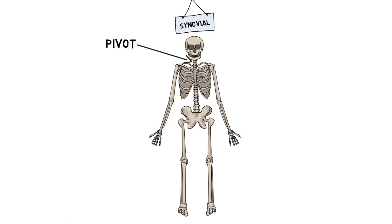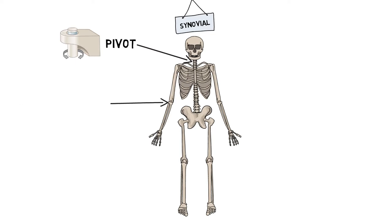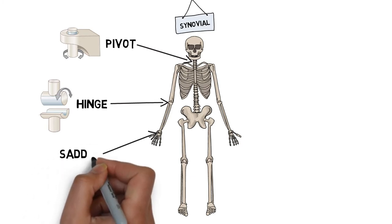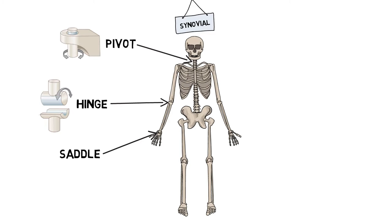Pivot joints only allow rotational movement, such as in your neck when shaking your head no. Hinge joints act just like a door hinge and only allow flexion and extension in one direction, such as our elbows or knees. Saddle joints act just like riding a saddle, where one bone saddles another, allowing forwards, backwards, and side-to-side movements, such as in our thumbs.